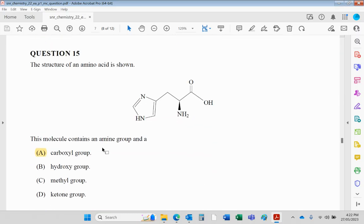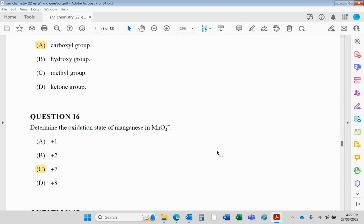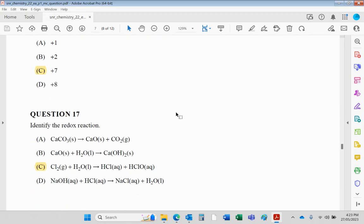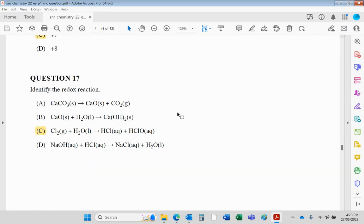Amino acid structure: molecule contains an amine group and a carboxyl group. Oxidation of manganese in MnO4−: oxygens are minus two, total minus eight, one left over is plus seven. The redox reaction here is C because it's the only one where there are oxidation number changes. Chlorine is going from zero on the left to minus one in HCl and plus one in HClO. Oxidation numbers are not changing in A, B, or D.